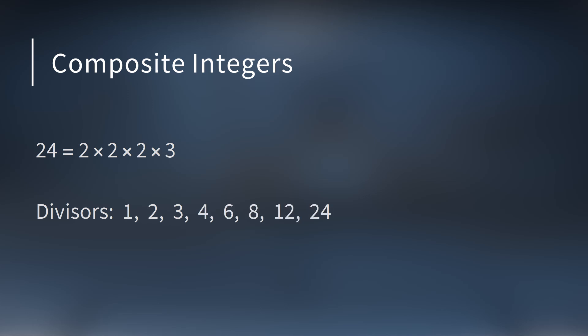We have prime numbers like 13. Then you have numbers like 24. It's not prime. It can be factored as 2 times 2 times 2 times 3. Because it's not prime, we call it composite. If you look at the numbers that divide 24, there's quite a few of them: 1, 2, 3, 4, 6, 8, 12, and 24. So it has 8 divisors. A divisor is a number that divides another number evenly. Literally one third of the integers from 1 to 24 divided evenly.